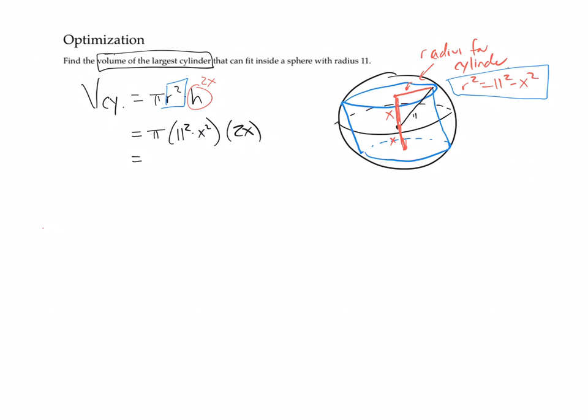So the volume of the cylinder is going to be pi times 11 squared minus x squared times 2x. If I rewrite that a little simplified, that's pi times 121 minus x squared times 2x. And I can foil this out and I'll get 242 pi x minus 2 pi x cubed.